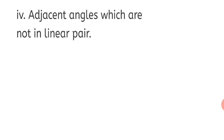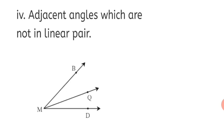Question 4: Draw adjacent angles which are not in a linear pair. Yes, we can draw adjacent angles with a common arm where the sum is less than 180 degrees. In the solution, Angle BMQ and Angle QMD are adjacent angles and are not in a linear pair — their sum is not 180 degrees. Draw any angle with a common arm showing different interiors, but do not draw them at 180 degrees; only draw angles less than 180.